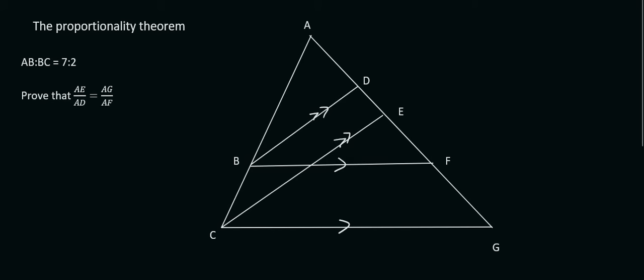Here's another proportionality question. So they tell us that AB to BC is 7 parts to 2. So we can make AB equal to 7X and BC can be 2X.